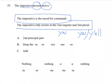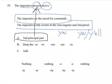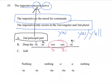To conjugate the imperative, the steps are very simple. You take the second principal part — you should have noticed by now that you always take the second principal part for any present tense. Then you drop the same old pattern: the -re for the first conjugation, the -re for the second conjugation, the -re for the fourth conjugation, and for the third and third-I, you drop the -ere or the -ere. Then you put on the endings.